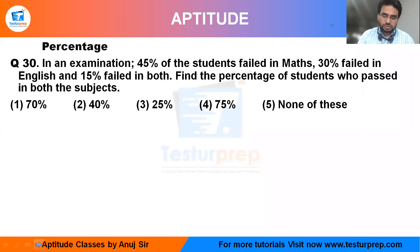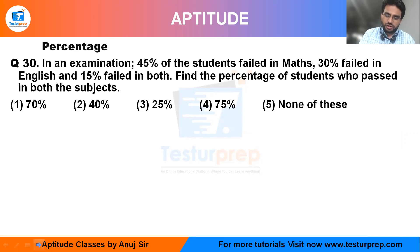Hello, this is question number 30 in your booklet. In an examination, 45% of students failed in mathematics, 30% failed in English, and 15% failed in both.